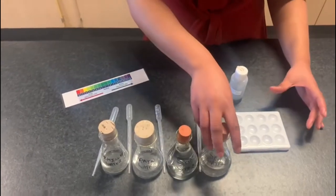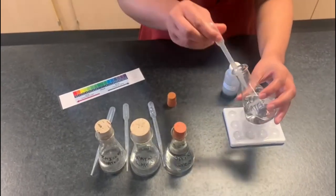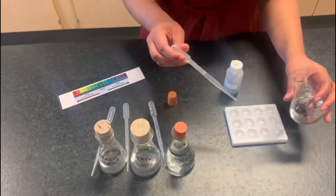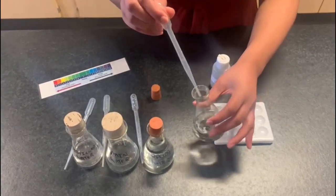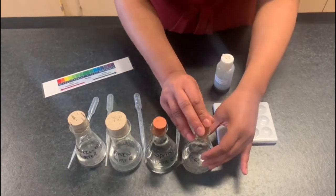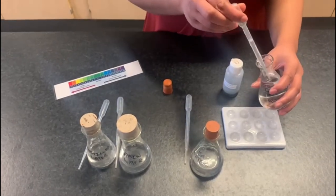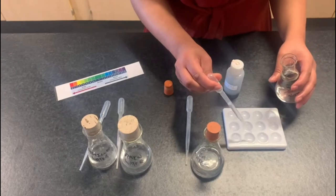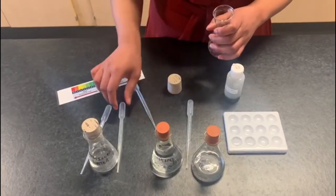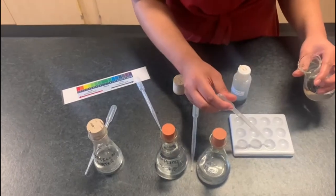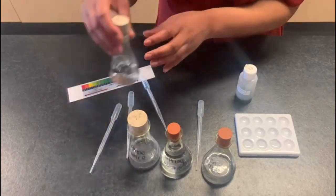So first of all I have seawater. I'm going to use the pipette to drop a few drops of the sample into the spotting tile. You don't need too much, just fill it halfway. I'm now going to put in spring water sample, and lastly, distilled water.